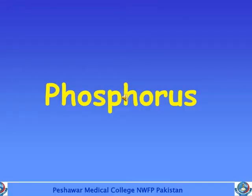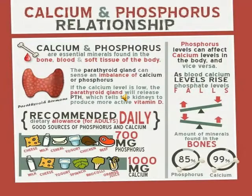Our next element is phosphorus. Phosphorus is essential for the formation of bones and teeth and plays an important part in all metabolism. An adult human body contains about 400 to 700 grams of phosphorus. A large amount of phosphorus is present in vegetable foods such as bananas and dates. It occurs in combination with phytin and is available to the body to the extent of 40 to 60%. Calcium and phosphorus are essential minerals found in bone, blood, and soft tissues. Phosphorus levels can affect calcium levels in the body, and as blood calcium levels rise, phosphate levels fall.